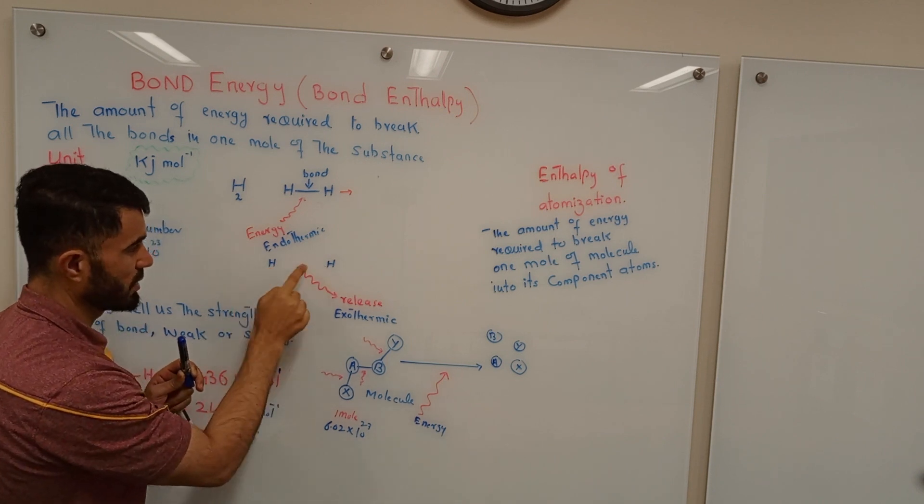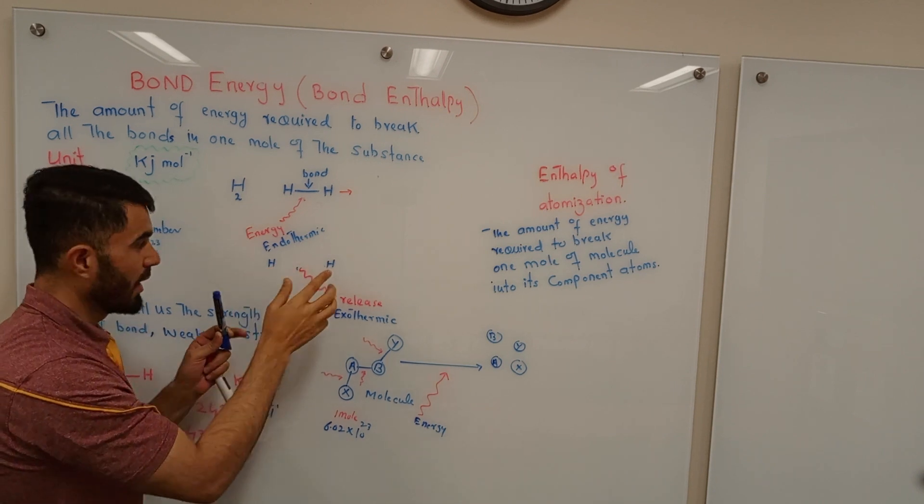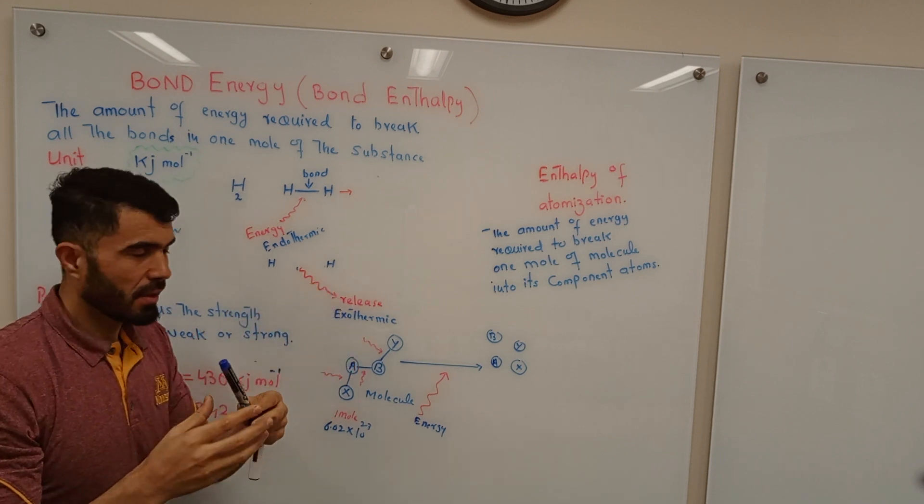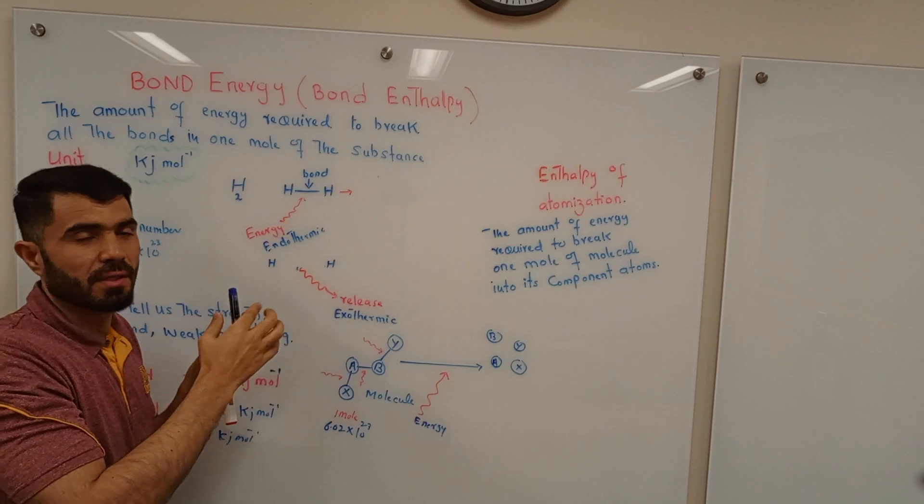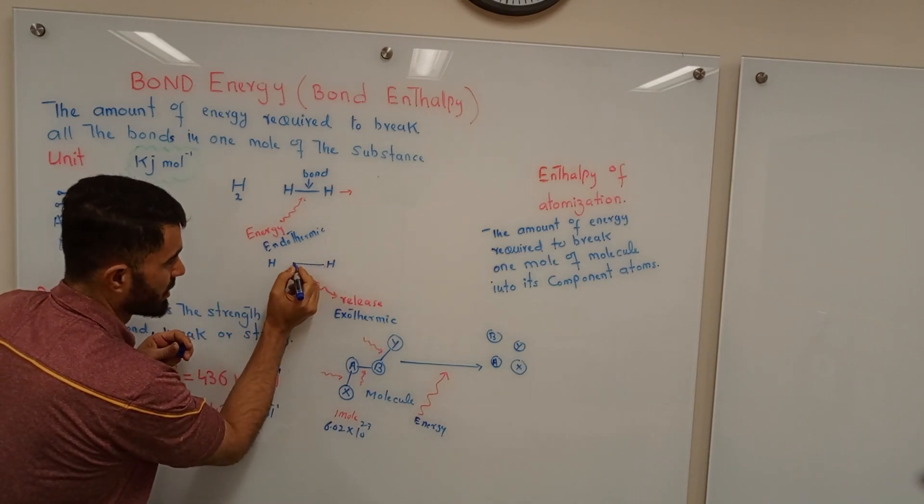Similarly, if you want to make a molecule, suppose this is one hydrogen, this is one hydrogen, this is another hydrogen, and these two hydrogen atoms are not linked. But if you want that these two atoms make a bond, so when they come close together, they make a bond.